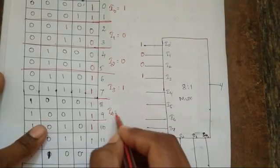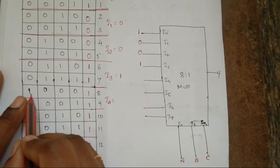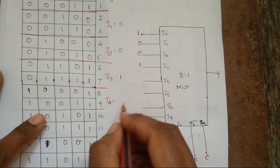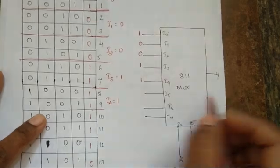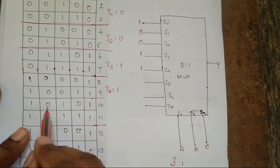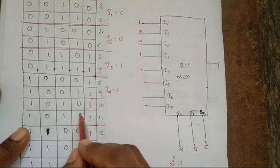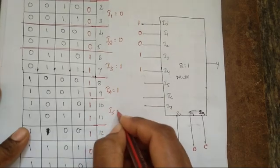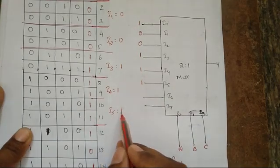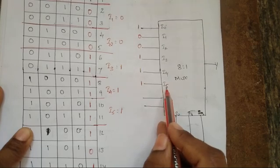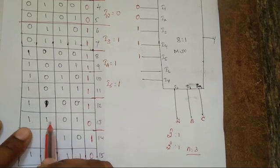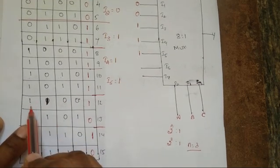For I4, when the select line is 1,0,0 — ABC=100 — irrespective of changes in D the output is 1, so connect 1 to I4. Next, when the select line is 1,0,1 — ABC=101 — irrespective of D the output remains 1, so connect 1 to I5.